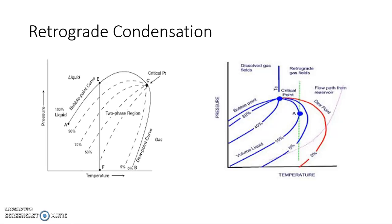This retrograde phenomenon is helpful in refining when you want to extract oil from the earth's crust. The oil is always associated with gas on top of it. Our primary aim is to get rid of that gas. Below the earth's crust, the pressure and temperature conditions are very similar to this critical region. When we remove the gas and bring it outside, the pressure tends to decrease, and due to this pressure decrease, the gas tends to get converted into liquid.